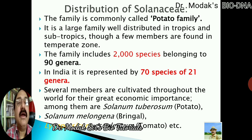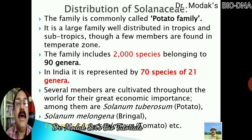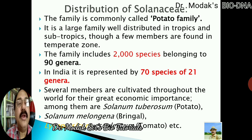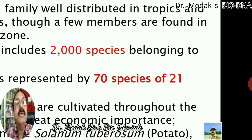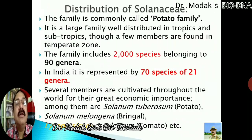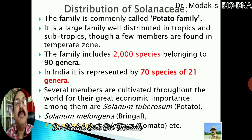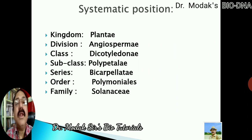The family is represented by 90 genera and about 2000 species. India also has about 21 genera of Solanaceae and about 70 species. Some of the important members are: potato — Solanum tuberosum, brinjal — Solanum melongena, and tomato — Lycopersicum esculentum. From this we can understand that this is a very important family.